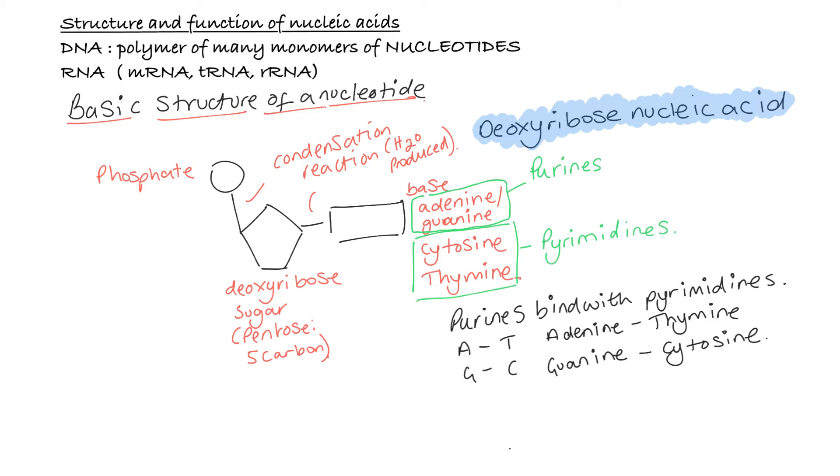But purines have a double ring structure. And pyrimidines have a single ring structure. So purines have a higher molecular weight than pyrimidines. But for your A-level, you absolutely don't need to worry about that. All you need to know is that adenine binds with thymine, guanine binds with cytosine, and adenine and guanine are both purines, and thymine and cytosine are both pyrimidines.